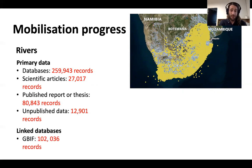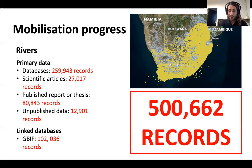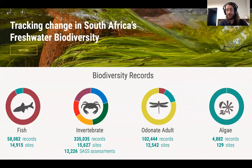But the platform also serves data from link-based databases. For example, the Global Biodiversity Information Facility, through which an extra 100,000 plus records are being served. So that leads to a total of just over half a million freshwater biodiversity data records being served through the FBIS, making this the most accessible and most extensive freshwater biodiversity data resource in South Africa to date.